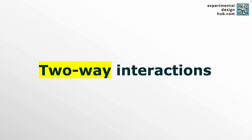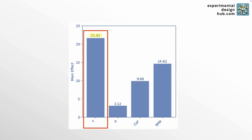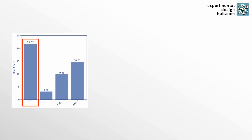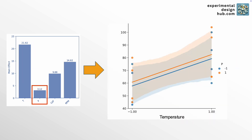It is different with two-way interactions, because they are of practical relevance — they describe how the effect of one factor depends on the level of another factor. For example, we have seen that on average an increase in temperature leads to an increase in filtration rate. But if we look closely, this is only true when the stirring rate is at its high level and not when it's at its low level. That means there is an interaction between stirring rate and temperature. In contrast, the effect of temperature is independent of the level of pressure — no matter which pressure we run the experiment at, temperature always has the same effect.